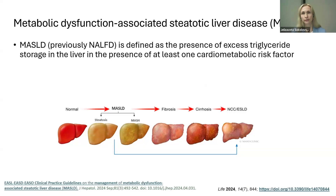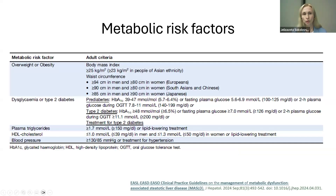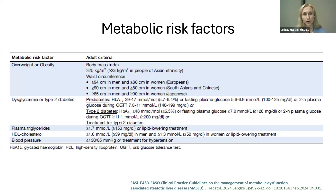Metabolic dysfunction associated steatotic liver disease (MASLD) is defined as the presence of excess triglyceride storage in the liver in the presence of at least one cardiometabolic risk factor. These are very similar to the metabolic syndrome risk factors: body mass index above 25 (lower cutoff in Asian populations), increased waist circumference (94 cm for European men, 80 cm for women), pre-diabetes or type 2 diabetes, increased plasma triglycerides, decreased HDL cholesterol, and hypertension.